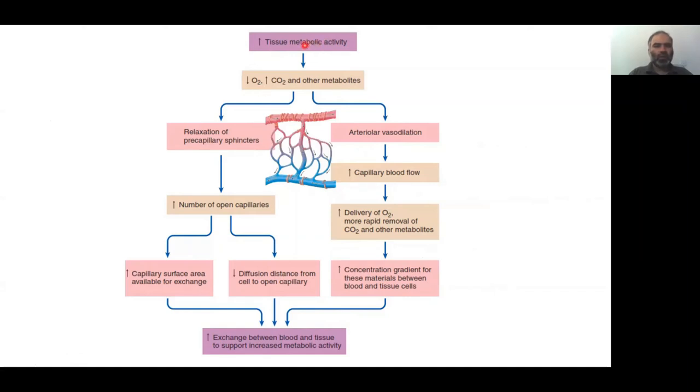For example, this is a muscle which you have just started to exercise and there is an increased metabolic activity. The demand of oxygen is there and the existing oxygen is low, and the carbon dioxide that you're now producing in this muscle is more, and other metabolites which are waste products are more now.